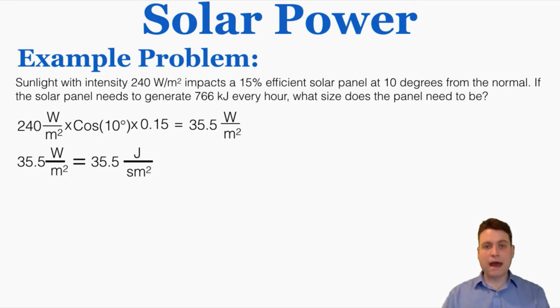And now because this question is asking about hours, I'm going to convert this into joules per hour times meter squared. So multiplying this by 60 seconds over one minute to cancel out the seconds, and then 60 minutes over one hour, canceling those things out, gets me 128,000 joules per hour meter squared.